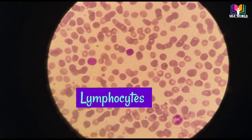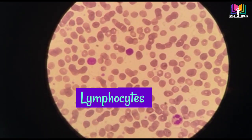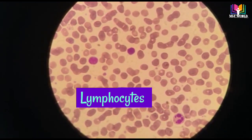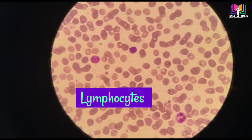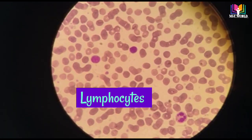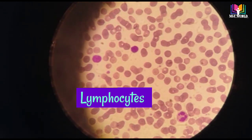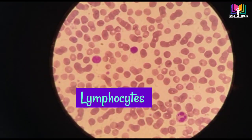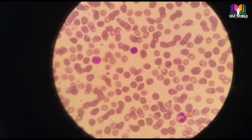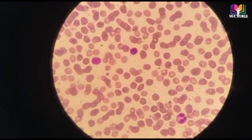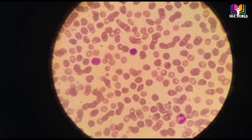The second most abundant cell is lymphocyte. In lymphocyte, the nucleus will be bigger and the nucleus-to-cytoplasm ratio — if you will see, the nucleus will be bigger and the cytoplasm will be small. There will be no granules present in the cytoplasm.